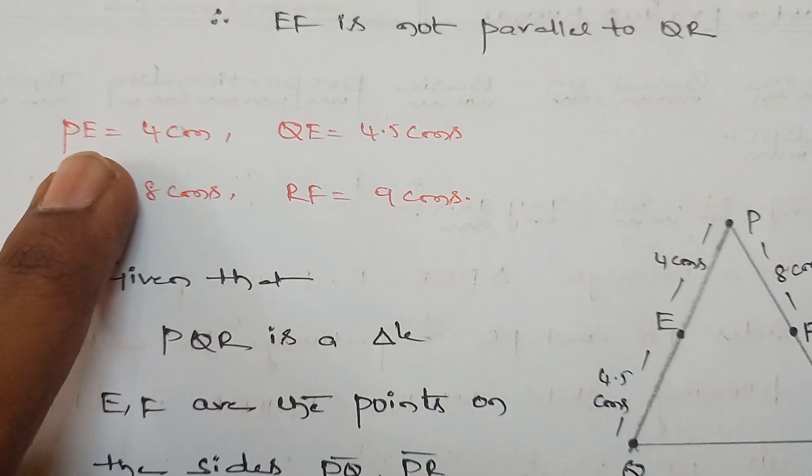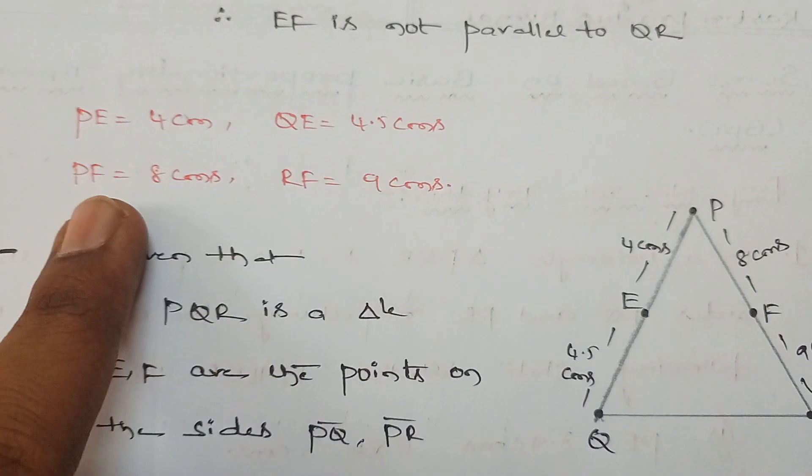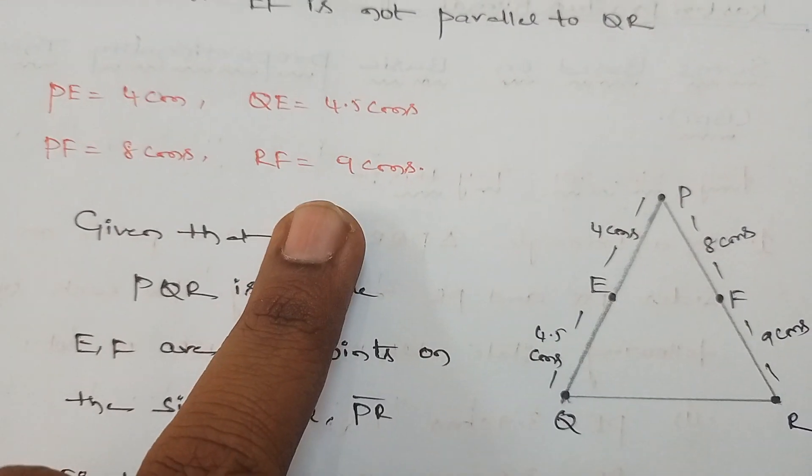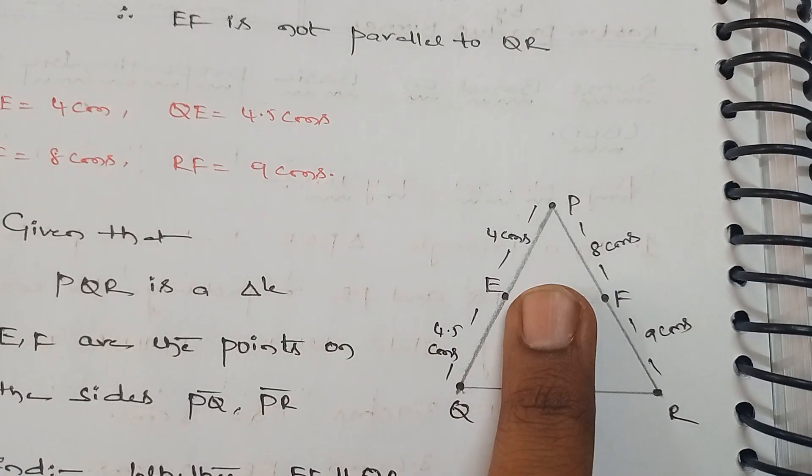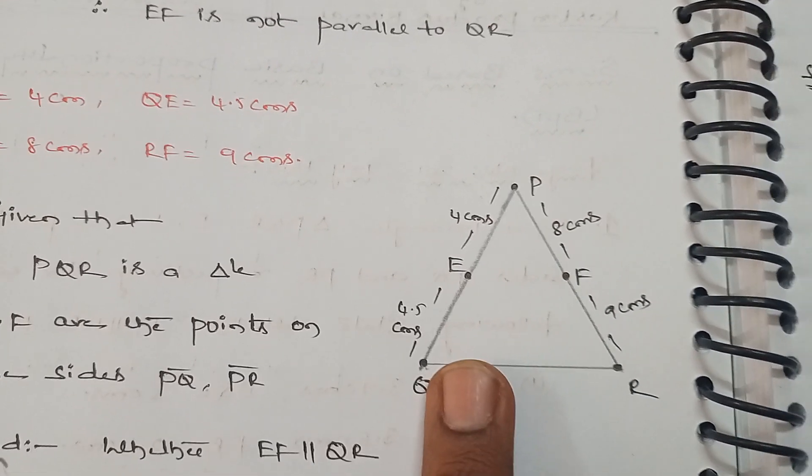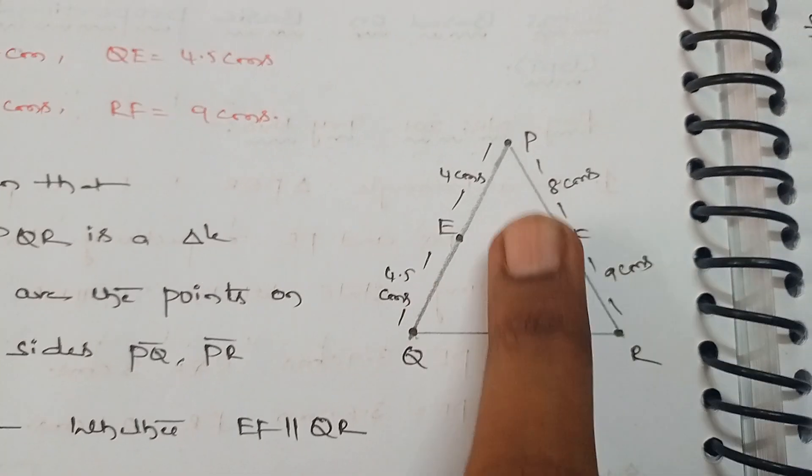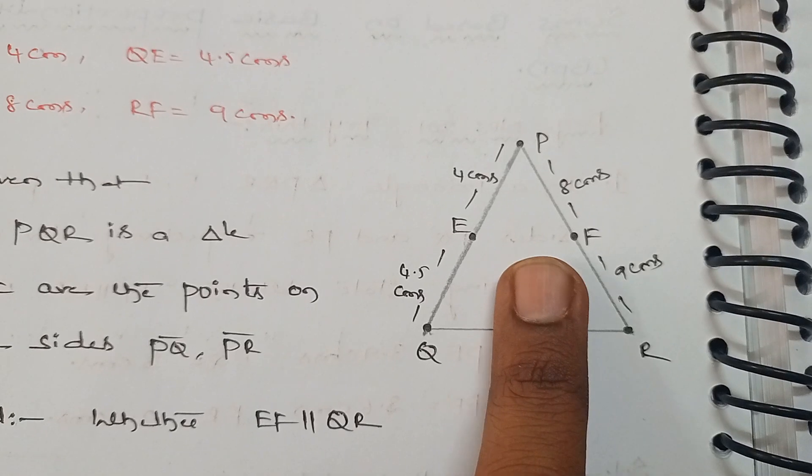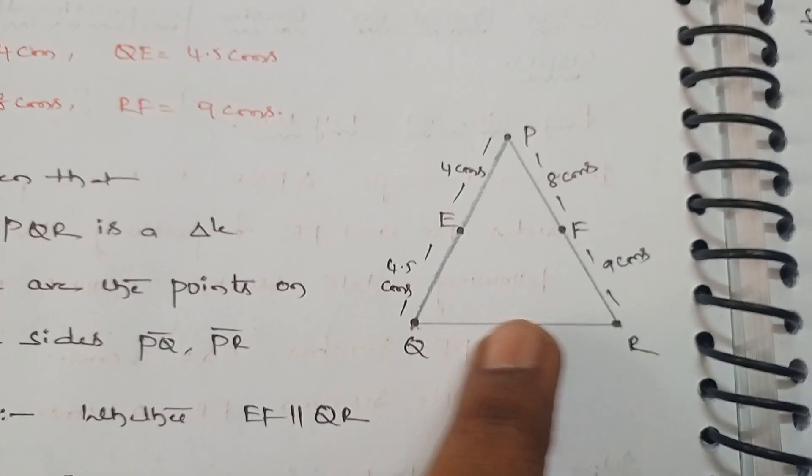PE equals 4 centimeters, UE equals 4.5, PF equals 8, RF equals 9 centimeters. We need to check whether EF is a line segment which is parallel to QR.